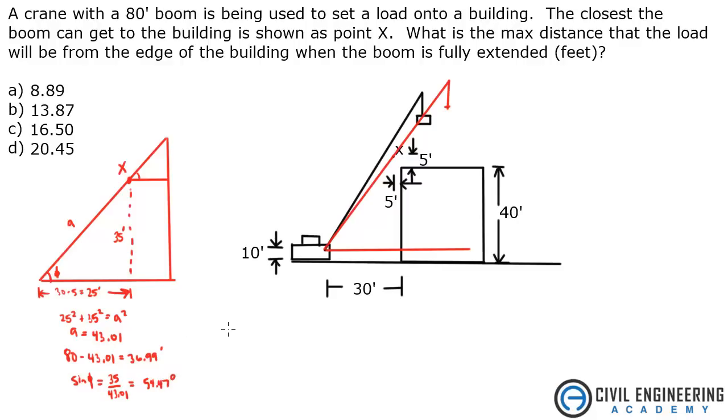Alright, so how does that help us? Now we can take that and we can solve for, I'm just going to call this dimension B. So now that we have that angle, and we know this distance now, we know this is 36.99. Right? Because we just got that. That's this point here. We'll call it C.